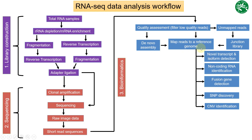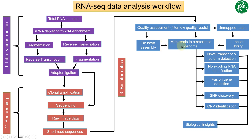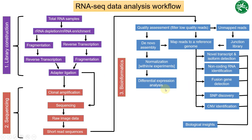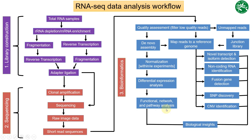After mapping your reads to the reference genome, you go for biological insights. From the de novo assembly mapped to a reference genome, we first do normalization because normalization within and between experiments is essential. Once done with normalization, you go for differential expression analysis. Normalization and differential expression analysis are important steps that I will cover individually in separate videos. After that, we go for functional network and pathway analysis through gene ontology and KEGG pathway analysis, which also yields biological insights.